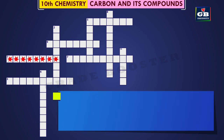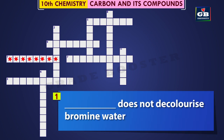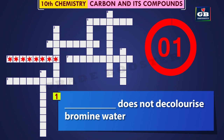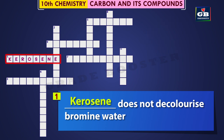1 Across: Dash does not decolorize bromine water. Did you get the answer? Kerosene. Kerosene does not decolorize bromine water.